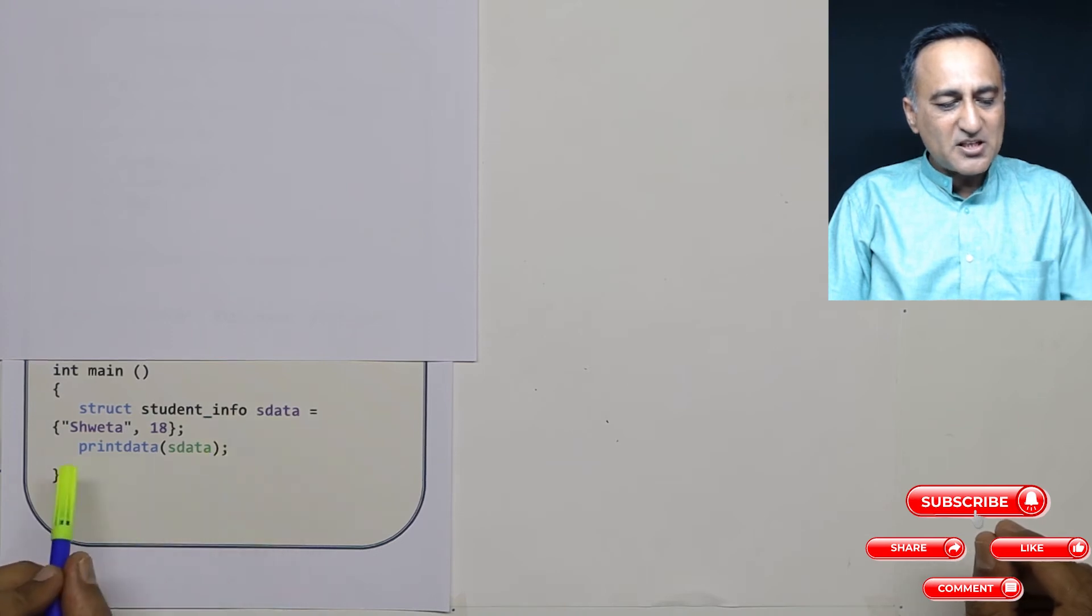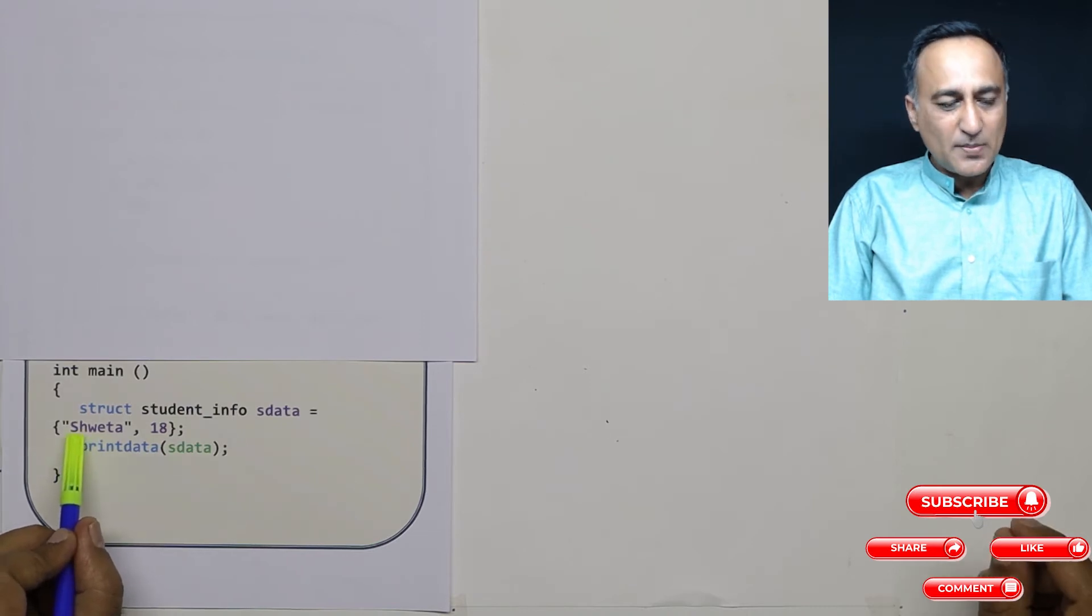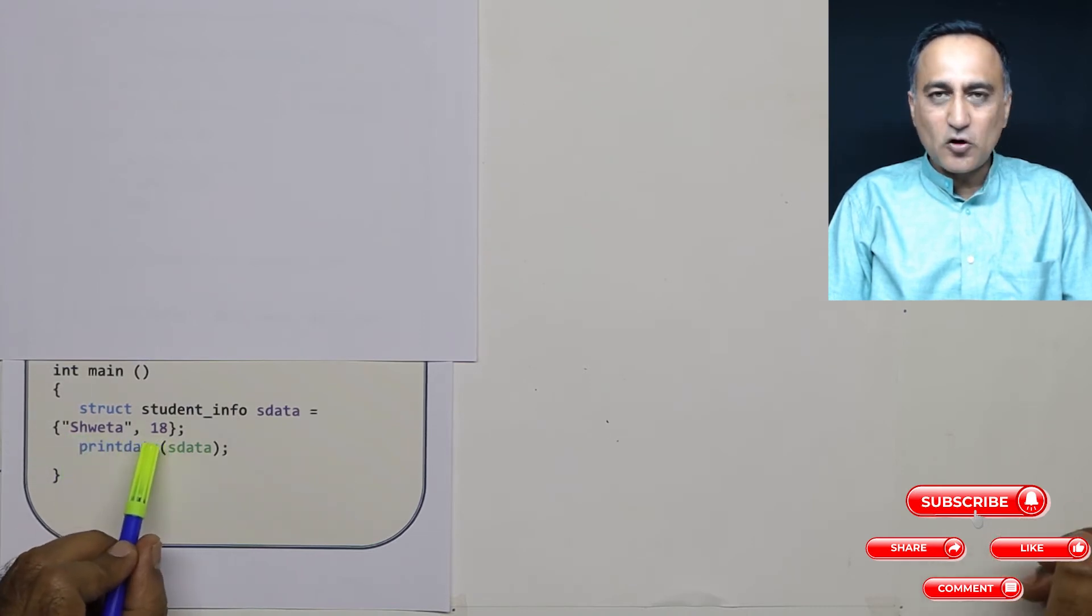Now I'm initializing sdata with the name Sweta and age. Name is a string, so I'm putting it in double quotes. Age is a normal number.